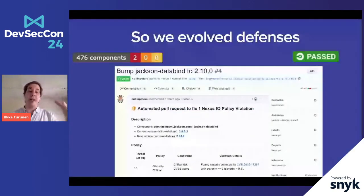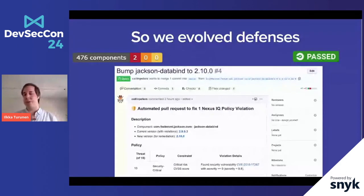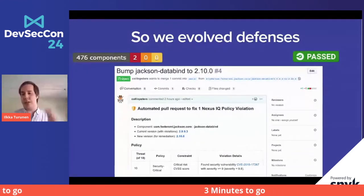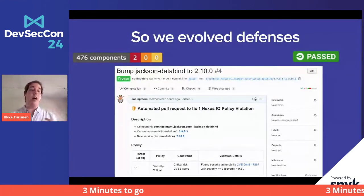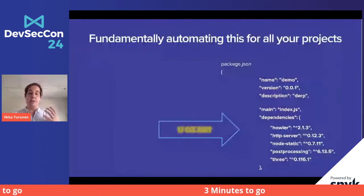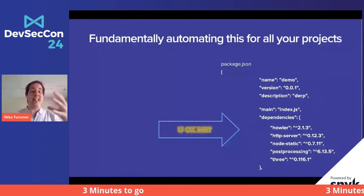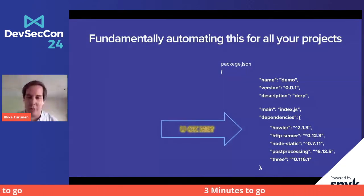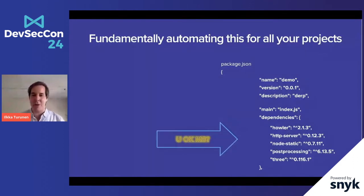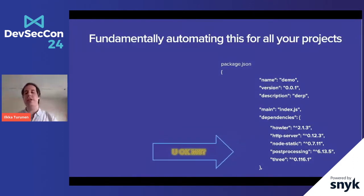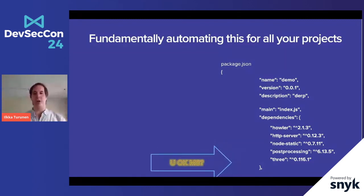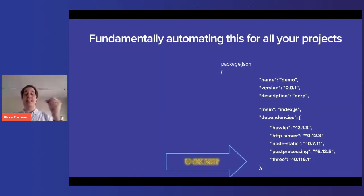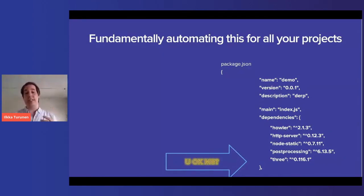The good news is defenses were developed. Sonatype and others built tools that help you understand what open source you have, bump versions, give you pull requests, banners in GitHub, and all the badges you need to tell your community you've got trouble. Fundamentally, what we did was automate the process of going through each component and asking: are there known security vulnerabilities on this? To encourage upgrading. That's really what all of these tools do.